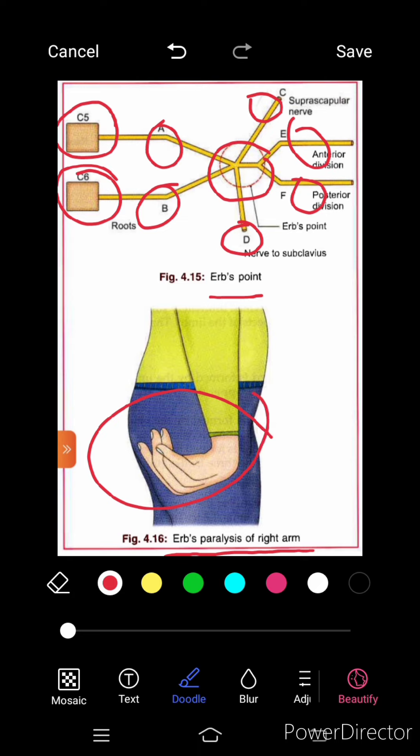In Erb's paralysis of the right hand, this deformity is known as policeman's tip hand, waiter's tip hand, or porter's tip hand. The disabilities include: lost movements are abduction and lateral rotation of the arm at shoulder joint, flexion and supination of the forearm, biceps and supinator jerks are lost, and sensation over a small area of the lower part of the deltoid are lost.